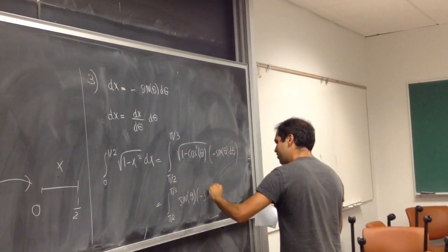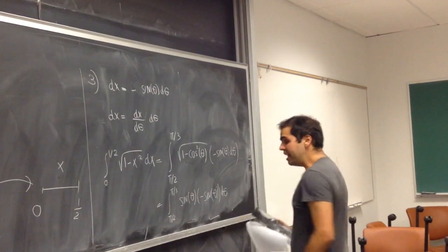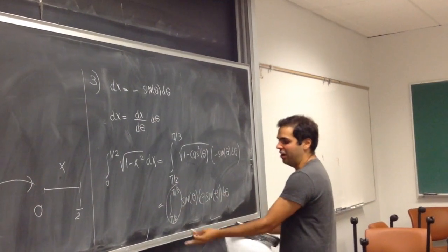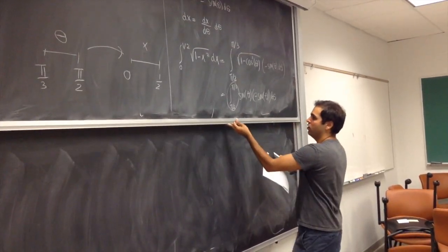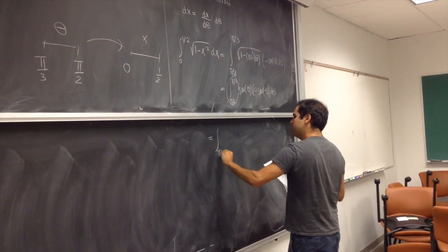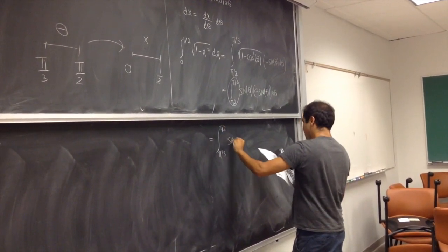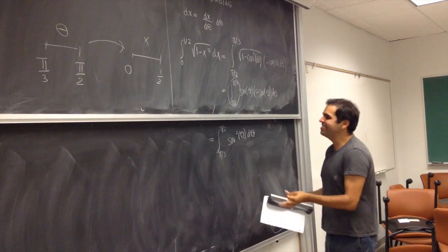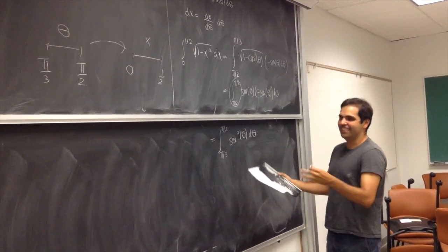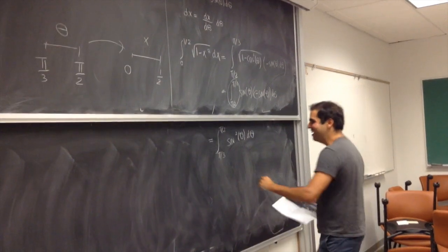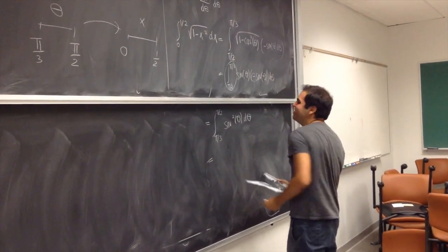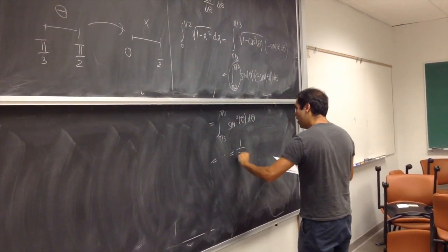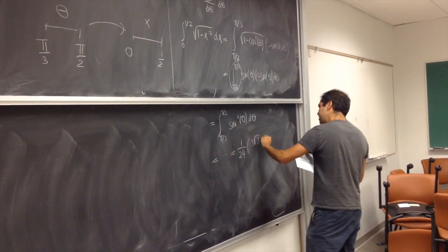We have minus sine of theta, but the orientation is also reversed, so it really becomes the integral from pi/3 to pi/2 of sine squared theta d theta. I won't calculate this — that's a great job for Steve — but if you do that you get 1/24 times (3 times the square root of 3 plus 2).